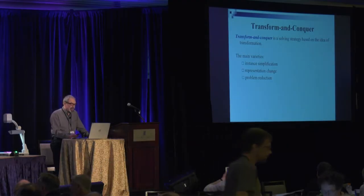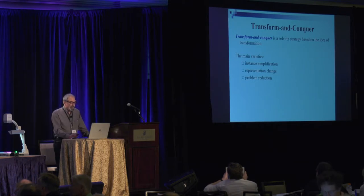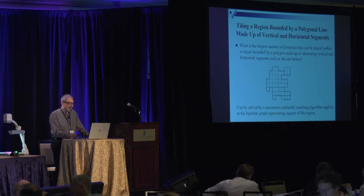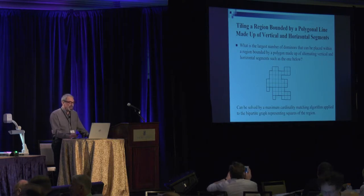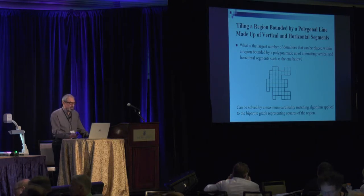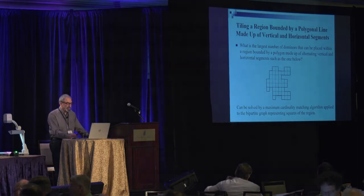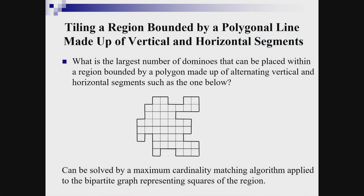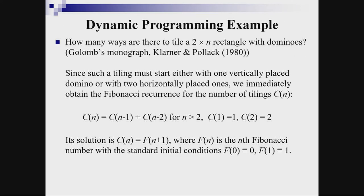The next strategy is transform and conquer, a solving strategy based on the idea of transformation. A good example is tiling a region bounded by a polygonal line made up of vertical and horizontal segments, which can be solved by a maximum cardinality matching algorithm applied to the bipartite graph representing squares of the region.